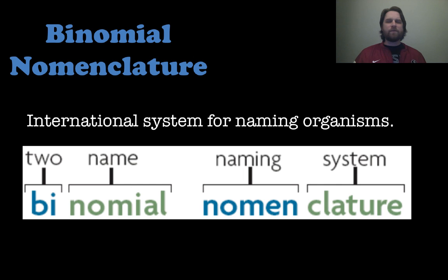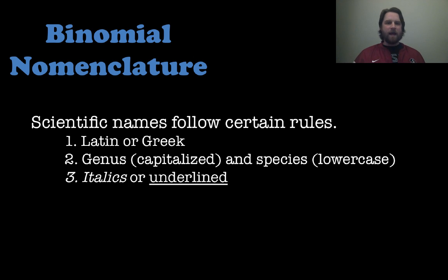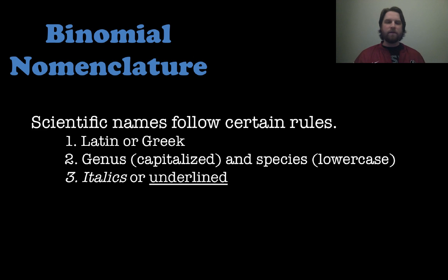Now let's talk about binomial nomenclature. 'Bi' means two, 'nomial' refers to name, and 'nomenclature' is naming systems. This is the international system for naming organisms. There are three rules: scientific names must have Latin or Greek roots; the genus is capitalized and the species is lowercase; and the name is always in italics or underlined — not both, but one or the other.